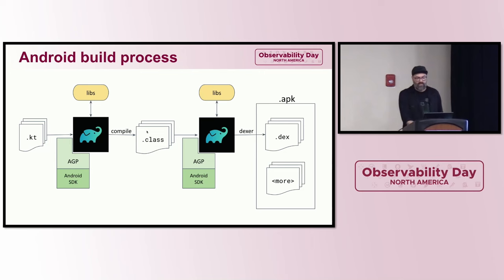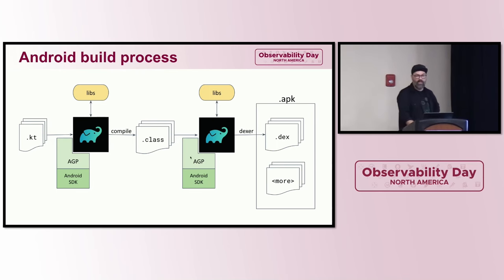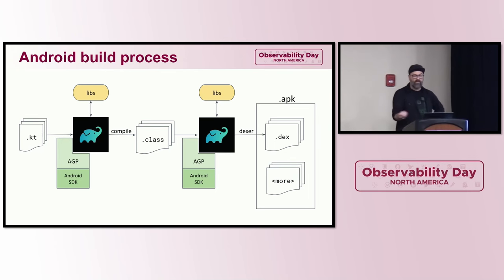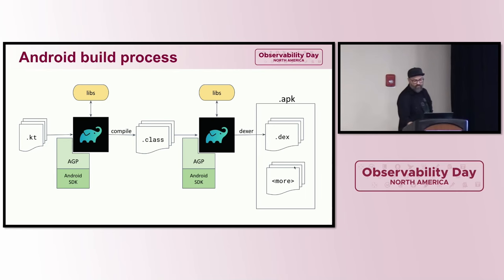Then there's an additional step called the dexing step. Using AGP on the Android SDK, it converts your compiled class files into a series of DEX files — Dalvik Executables. Dalvik used to be the name of the runtime on Android; it's still the binary executable format. These DEX files contain classes from your libraries and your application, along with other resources. That's the build process today.